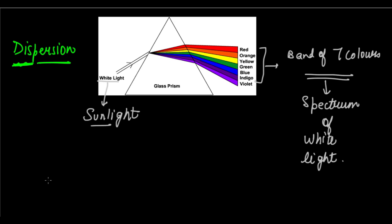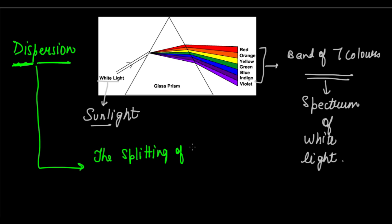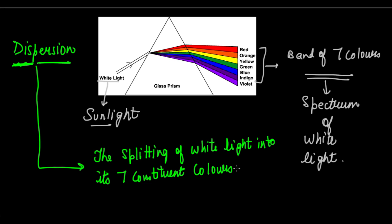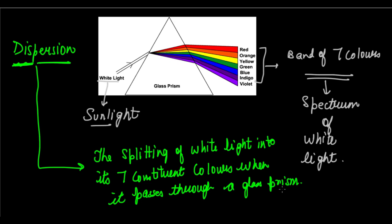This phenomenon — the splitting of white light into its seven constituent colors when it passes through a glass prism — is what we call dispersion of white light. Dispersion of white light is defined as the splitting of white light into its seven constituent colors when it passes through a glass prism. This is an important definition, please remember it for your exams.